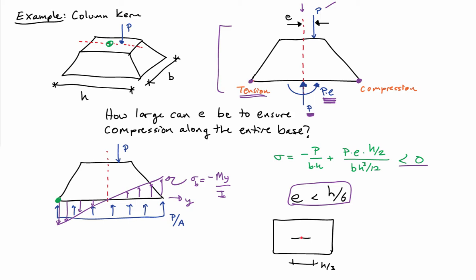If I make a plot looking straight down onto the top of the column, I see that I have a distance H over 3 centered right in the middle of the column that allows me to apply the load. So if I apply the load anywhere in this region here, which is H over 3 wide, I'll still have compression in the beam.